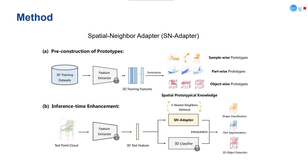During inference, the SL adapter is appended to the feature extractor and utilizes K nearest neighbors to retrieve 3D knowledge from the pre-constructed prototypes. Finally, we linearly interpolate the classification logit of the SL adapter and the trained 3D classifier.